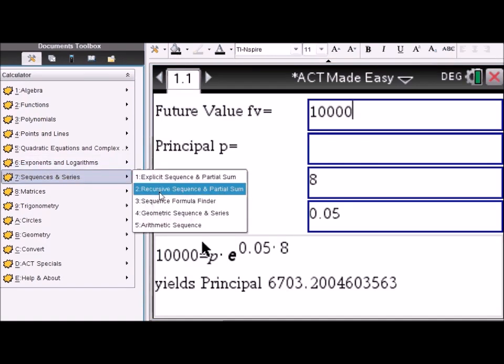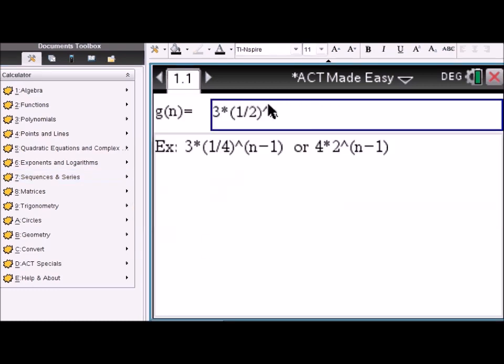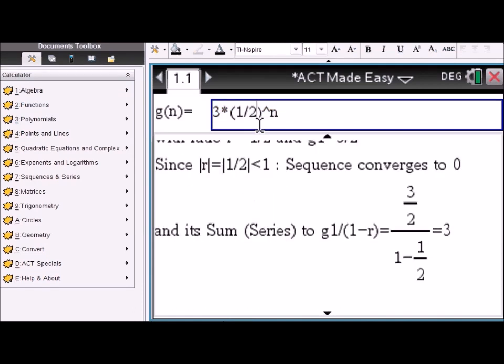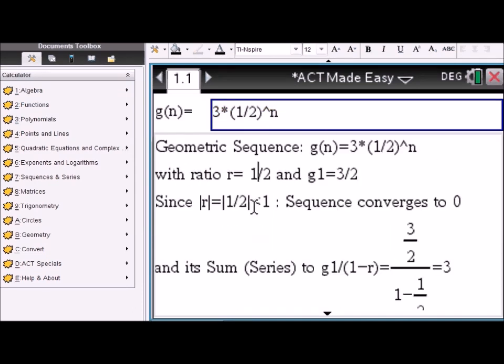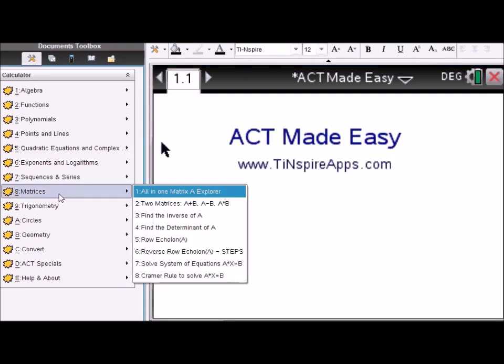Sequences and series. Let's go to geometric sequence and series. You enter a geometric sequence formula and then you get all the information: the common ratio is 1/2, the first term is g1. Since the common ratio's absolute value is less than 1, the sequence converges and its sum, the series, approaches 3.